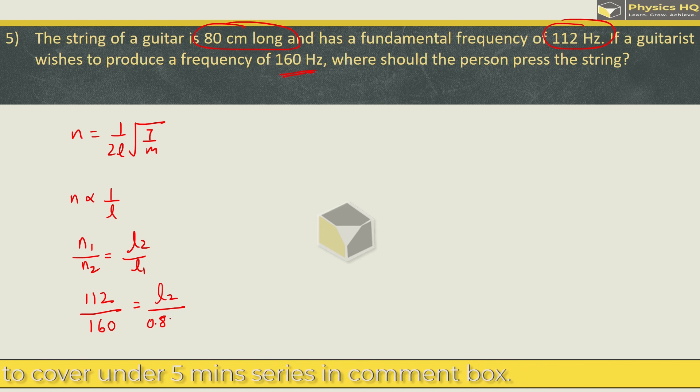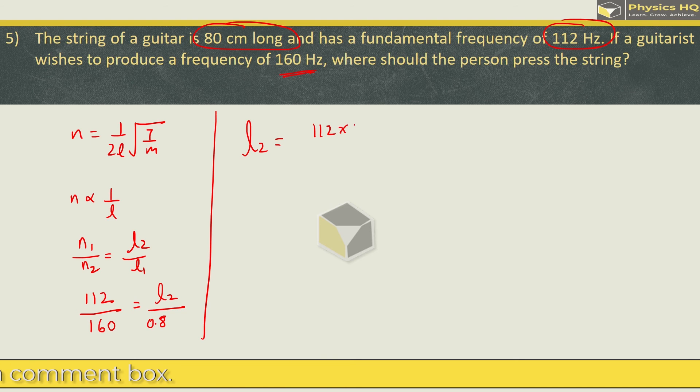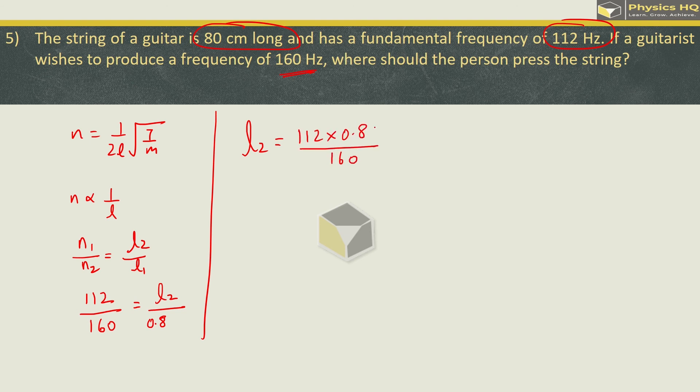In the second case, we will find length. First case length is 80 cm, which is 0.8. L2 is equal to 112 into 0.8 divided by 160. We will have 89.6 divided by 160, which gives 0.56 meter or 56 cm.